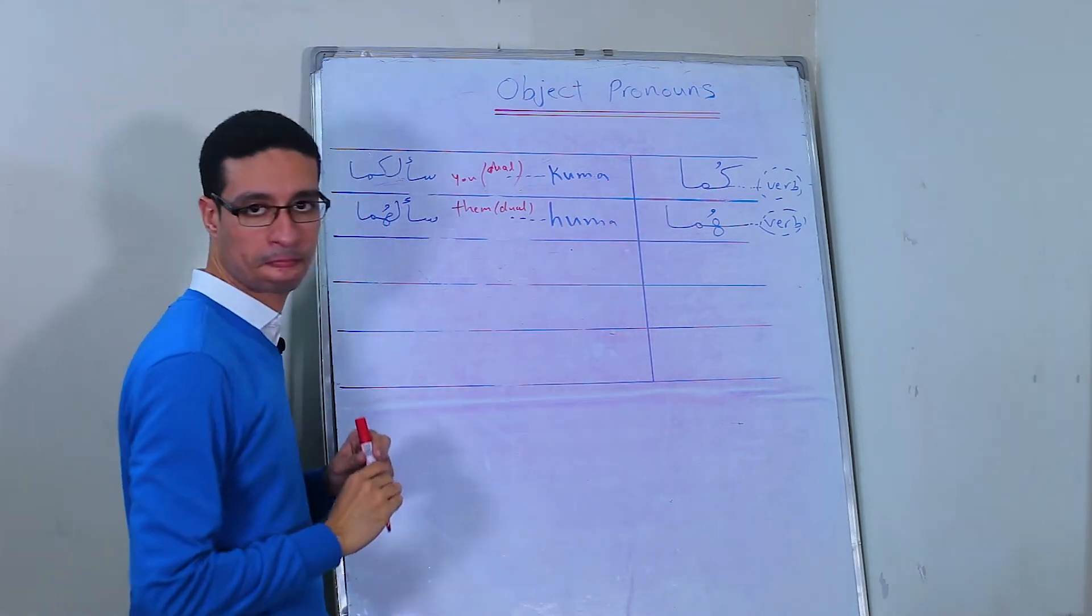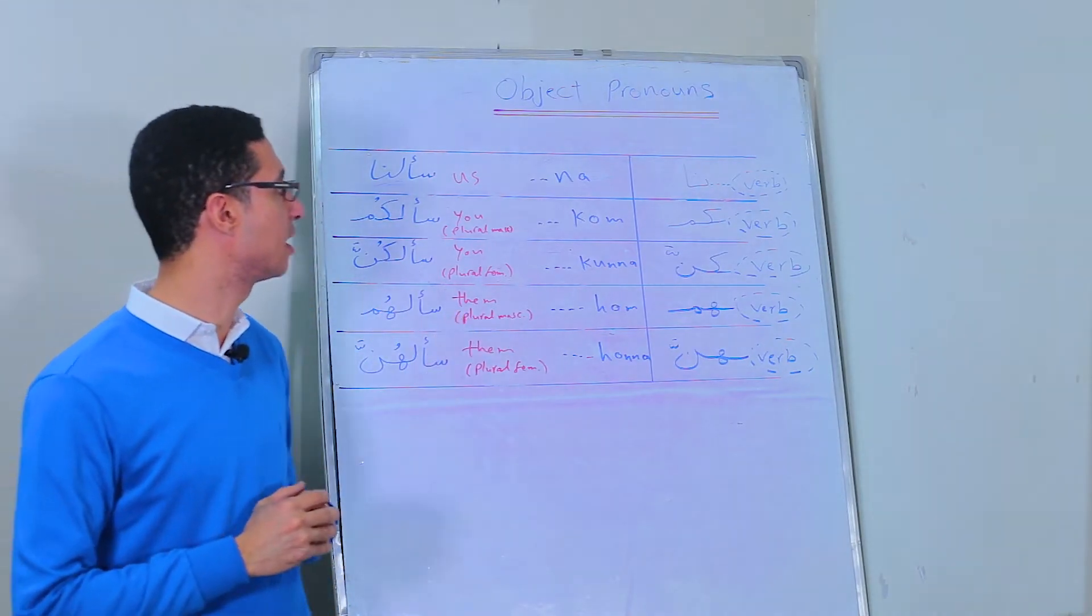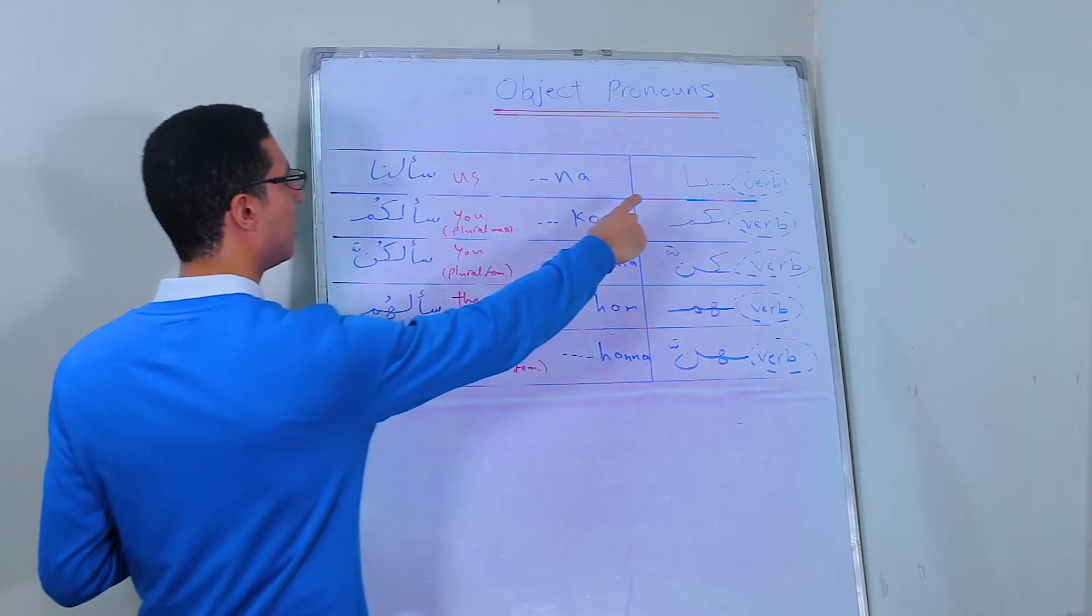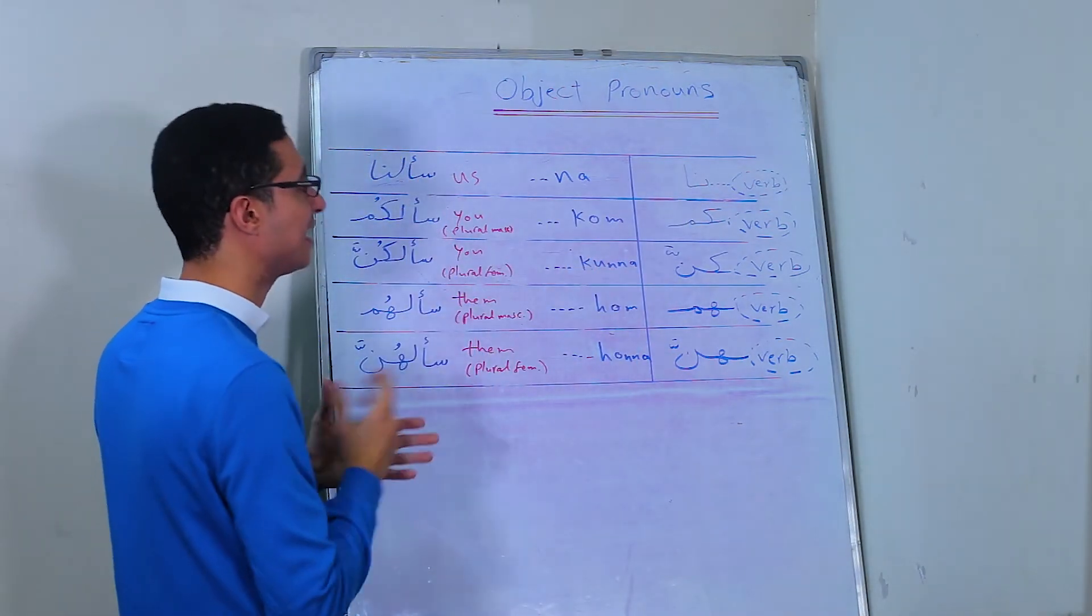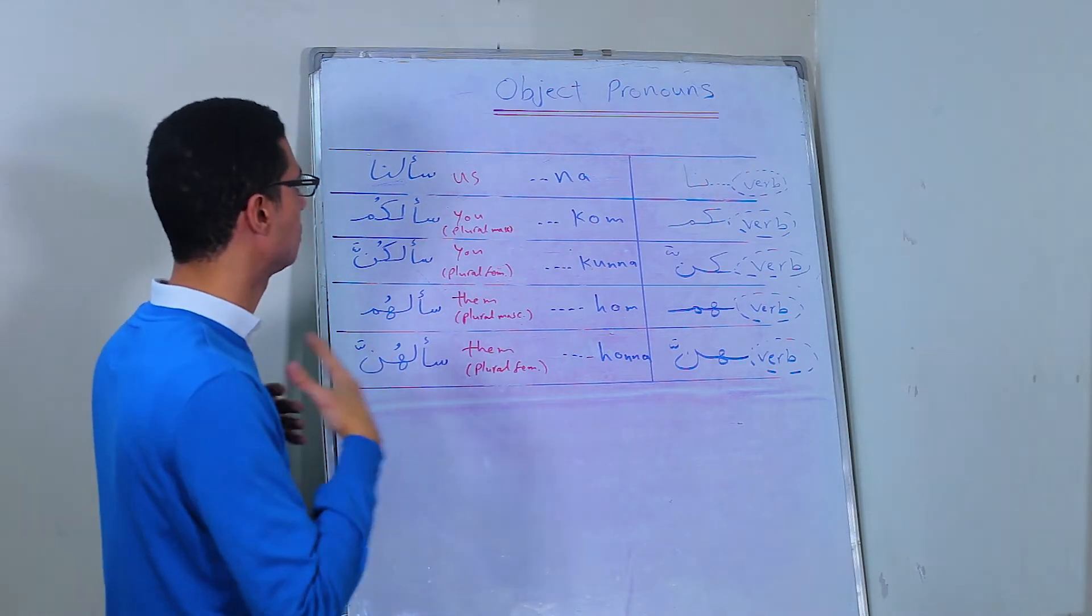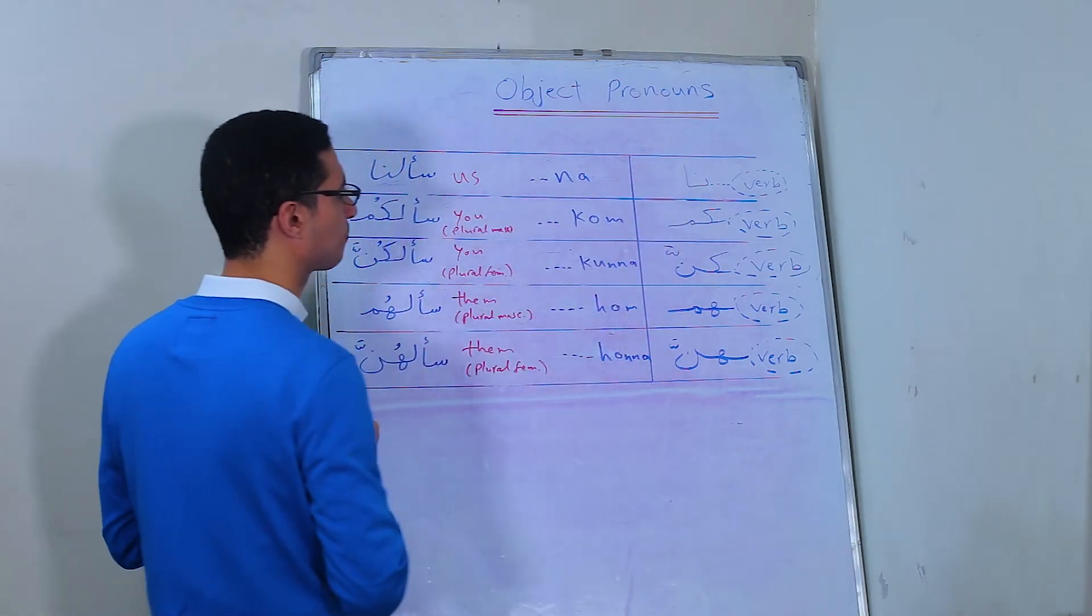The last group is the plural group. And it's نا. سألنا, he asked us. So it means for us, he asked us.